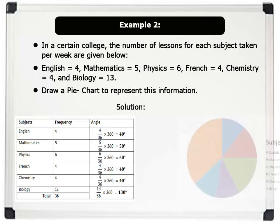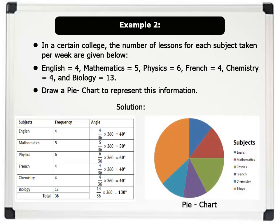Now, representing the information on a pie chart, we see that English equals 40 degrees. Mathematics equals 50 degrees. Physics equals 60 degrees.